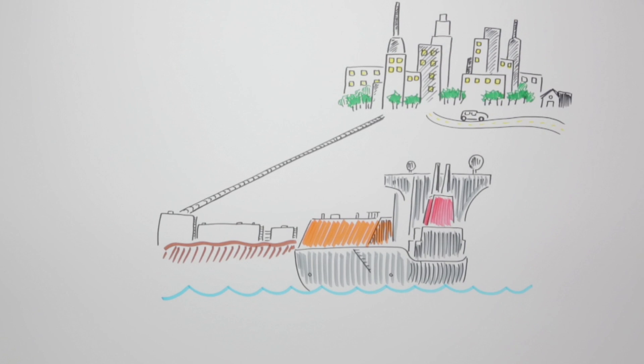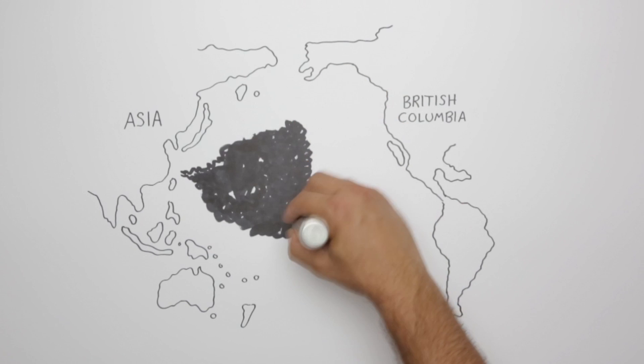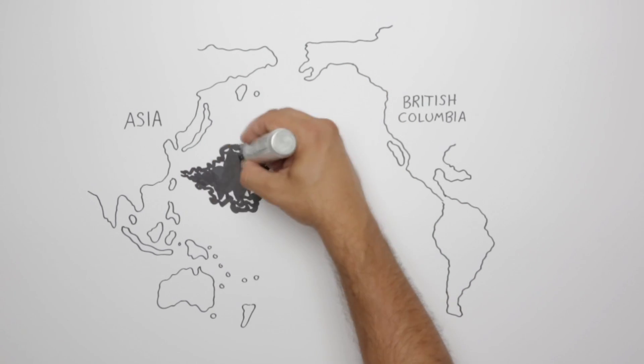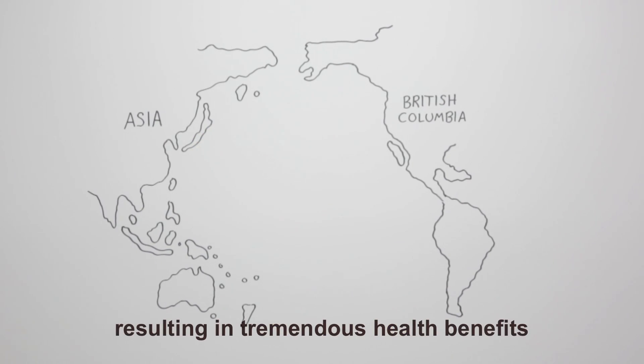By having access to cleaner burning natural gas from British Columbia, other countries in Asia can use less coal and other fossil fuels, resulting in tremendous health benefits in Asia and the rest of the world.